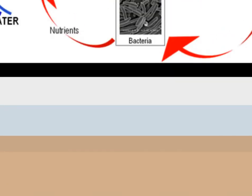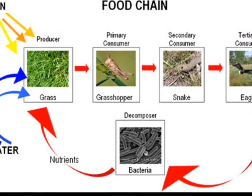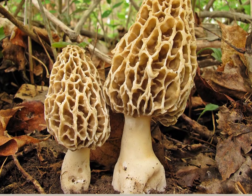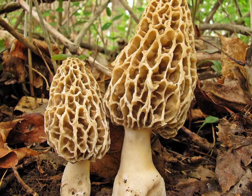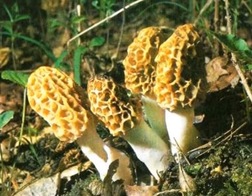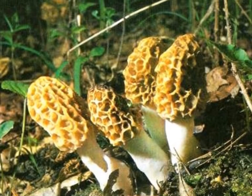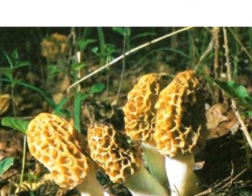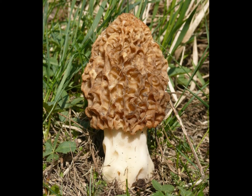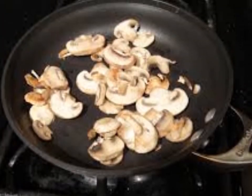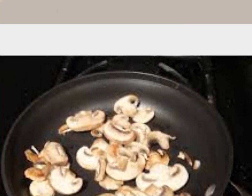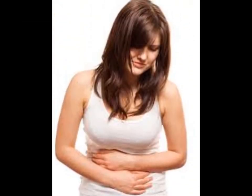Morchella esculenta is native to Europe and North America. It is also one of the earliest edible mushrooms, first appearing in April and most prominent in May. This type of morel is a beloved delicacy, especially in France. However, they do contain small amounts of toxins which are removed through cooking and should never be eaten without being cooked — otherwise it can cause severe stomach pain and sickness.